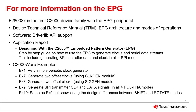The F28003X is the first C2000 device family with the EPG peripheral. For more information on the EPG, users can review the Device Technical Reference Manual, or TRM, for information on the EPG's architecture and modes of operation. DriverLib API support is also available for the EPG peripheral. An application report named Designing with the C2000 Embedded Pattern Generator is also available to provide a step-by-step guide on how to use the EPG to generate clocks and serial data streams. This application report includes generating SPI controller data and clock signals in all four SPI modes. C2000 ware examples are also available for the EPG peripheral.